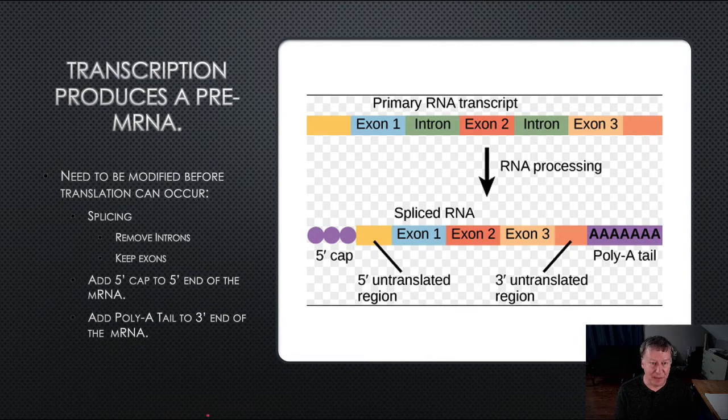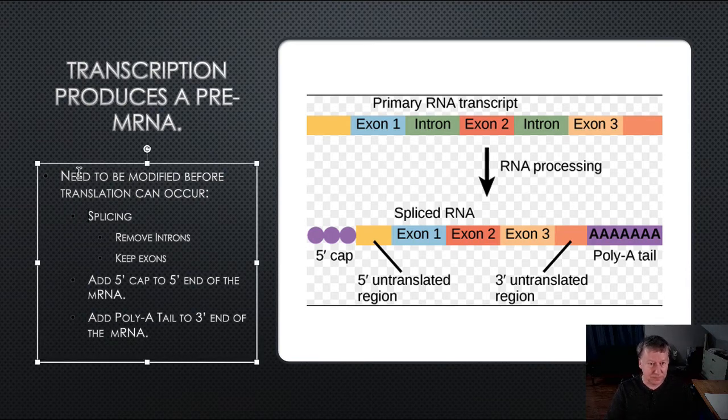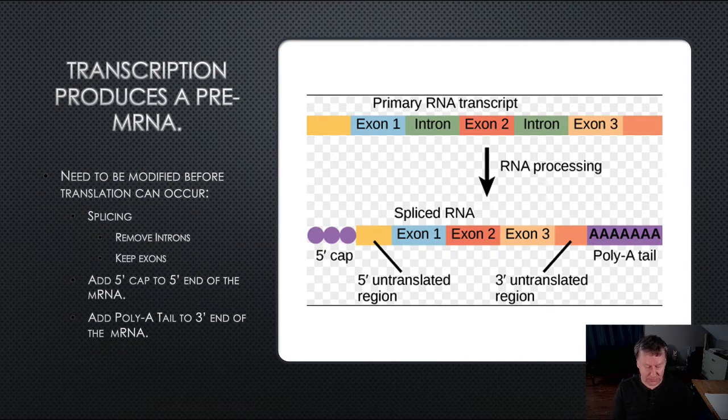The first thing that we need to have happen is splicing. For splicing, we need to go ahead and remove introns and keep the exons. Talk about that in a moment.